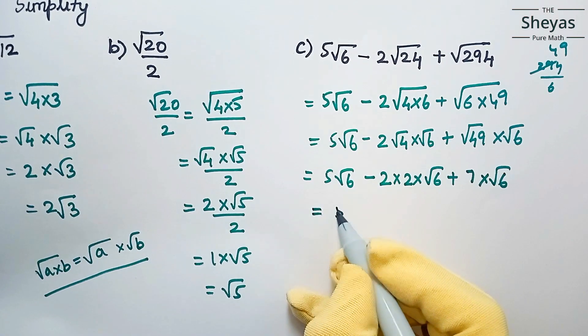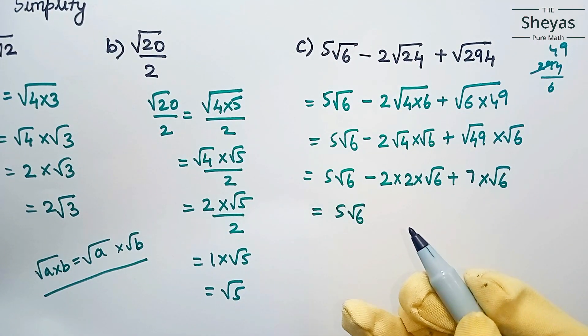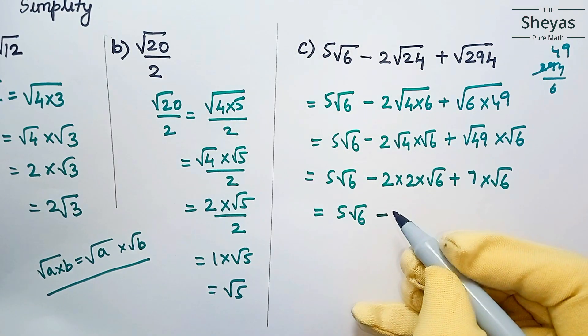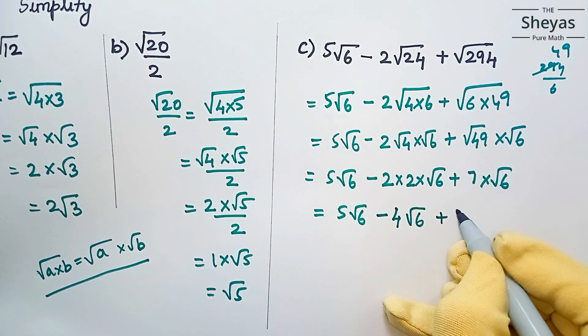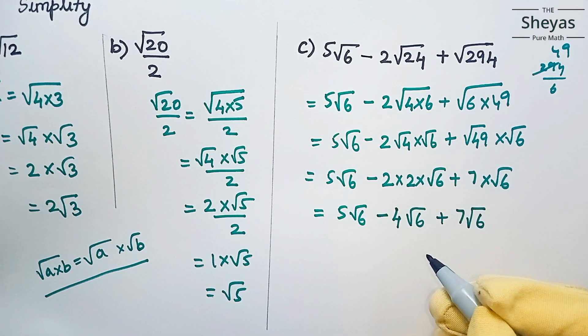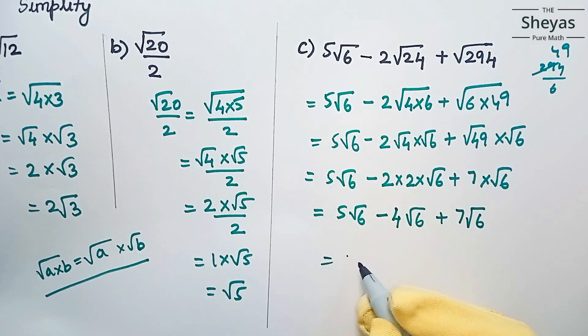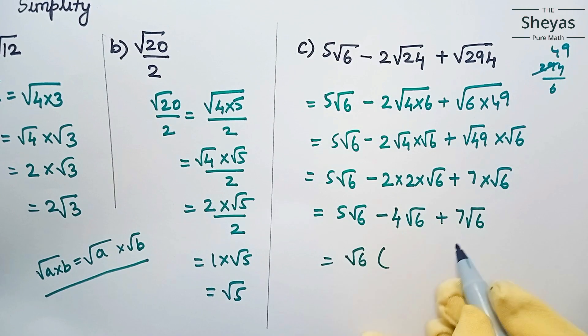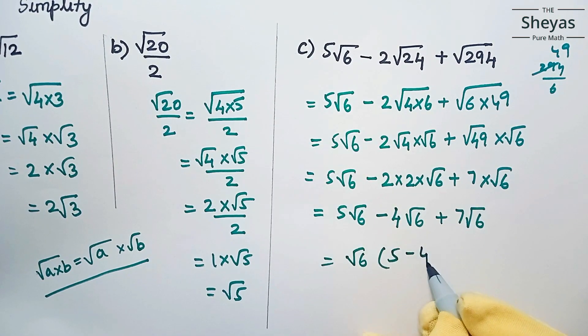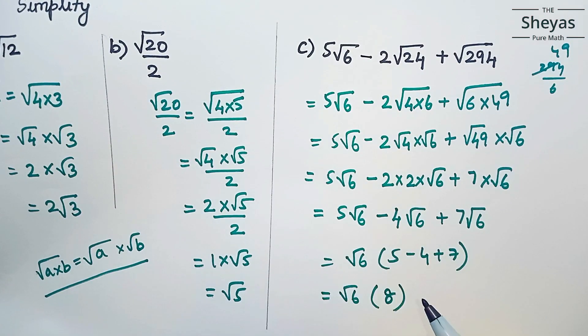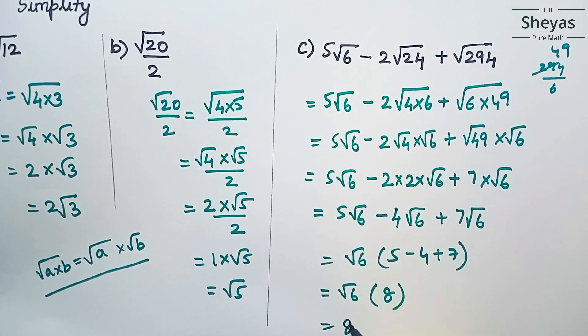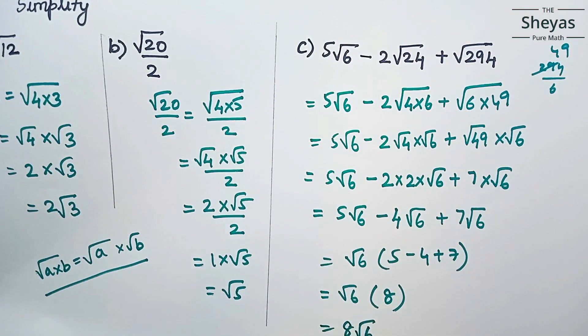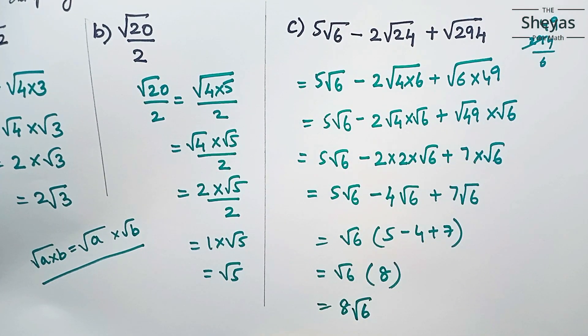This can be written as 5 root 6, so 2 times 2 is 4 root 6, plus 7 times root 6. In all the terms you have root 6, so you can take it as common. Therefore, the remaining terms are 5 minus 4 plus 7, which equals 8, then root 6. 8 times root 6 can be written as 8 root 6. This is the required answer.